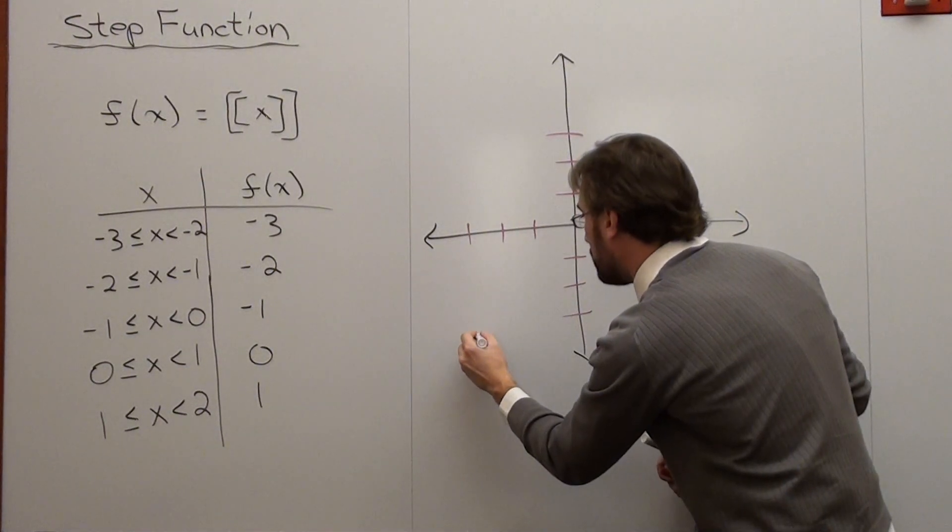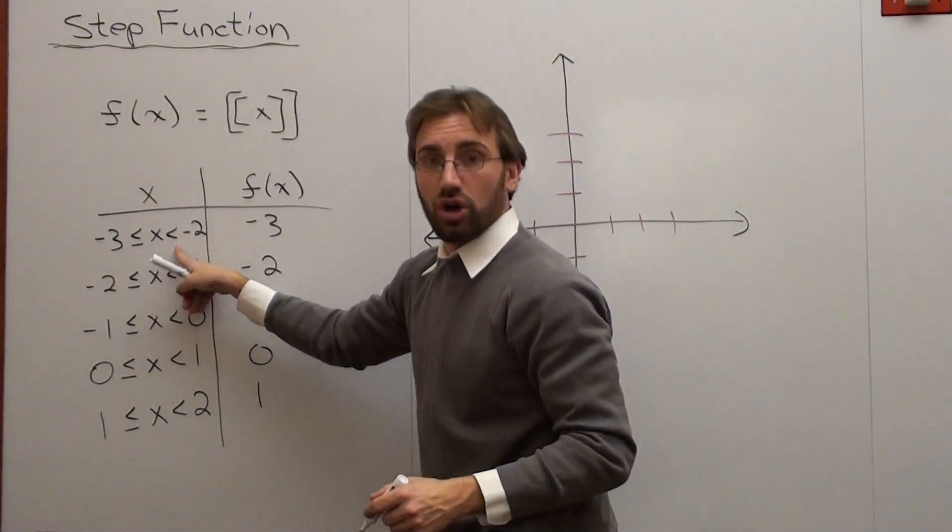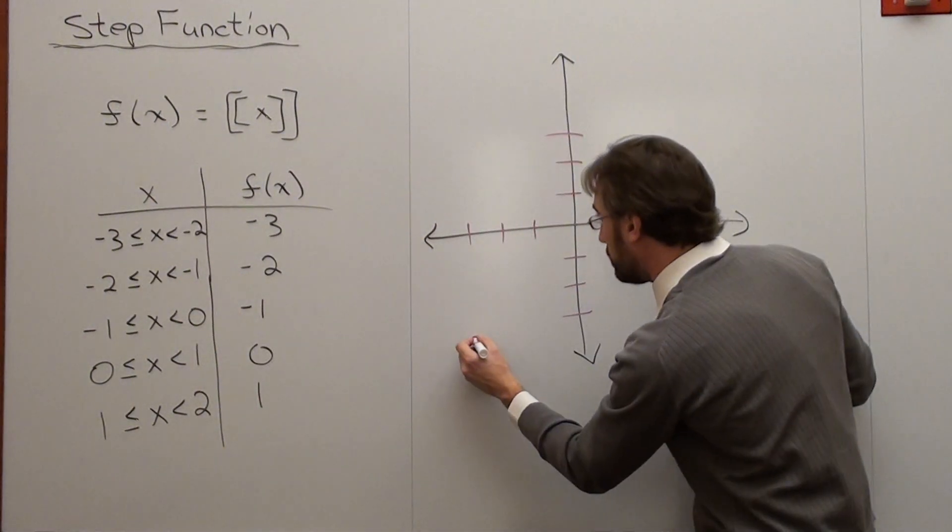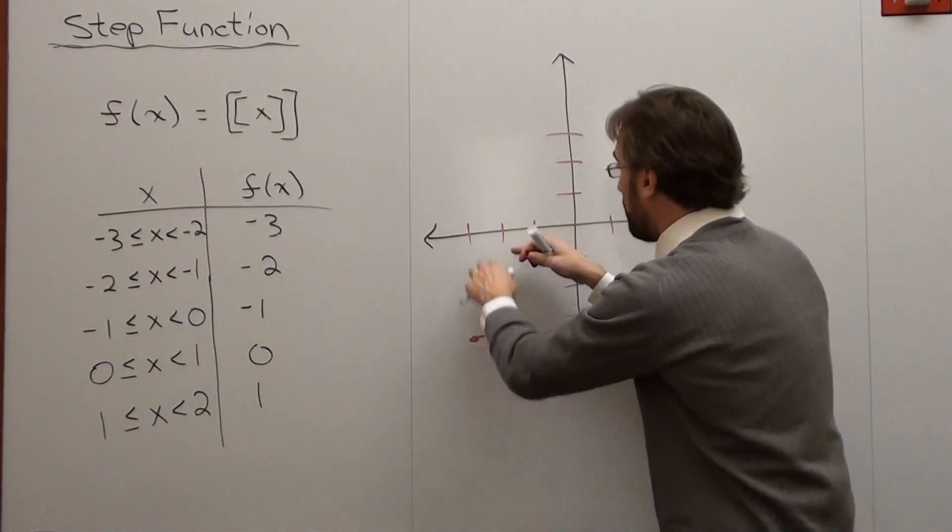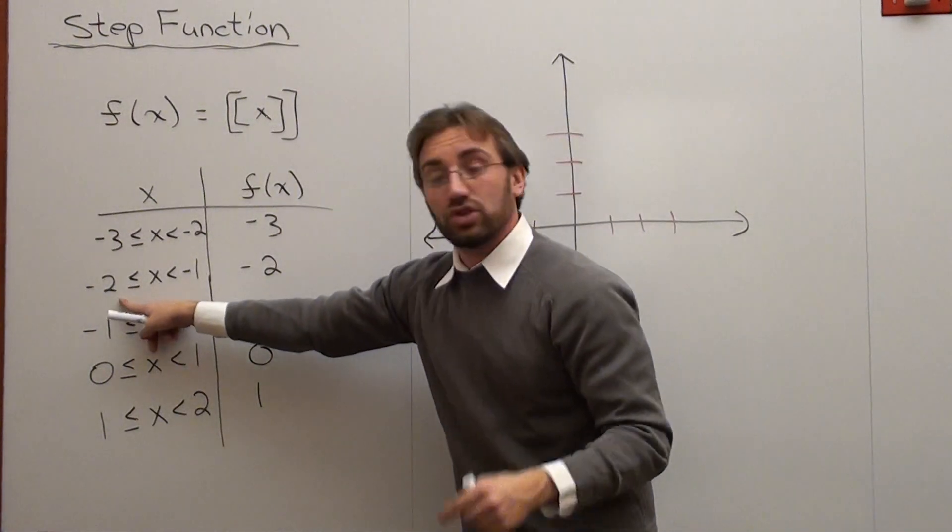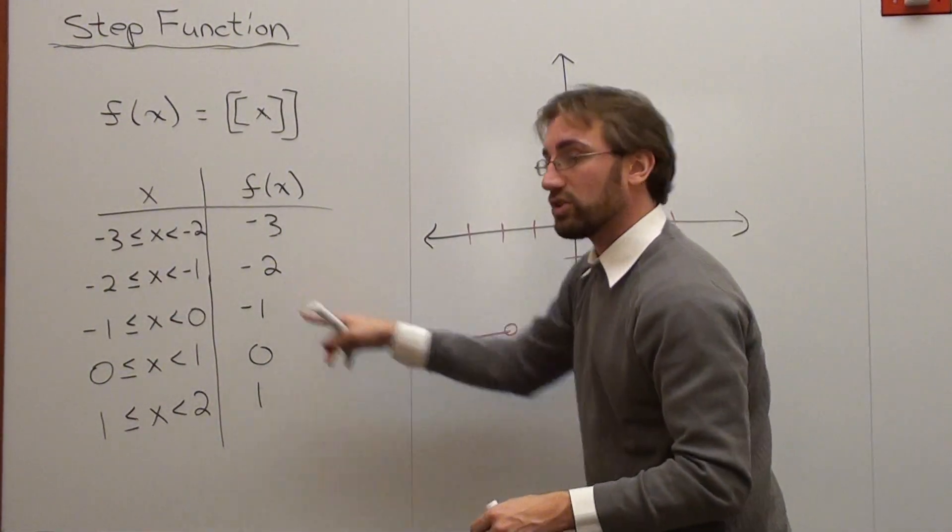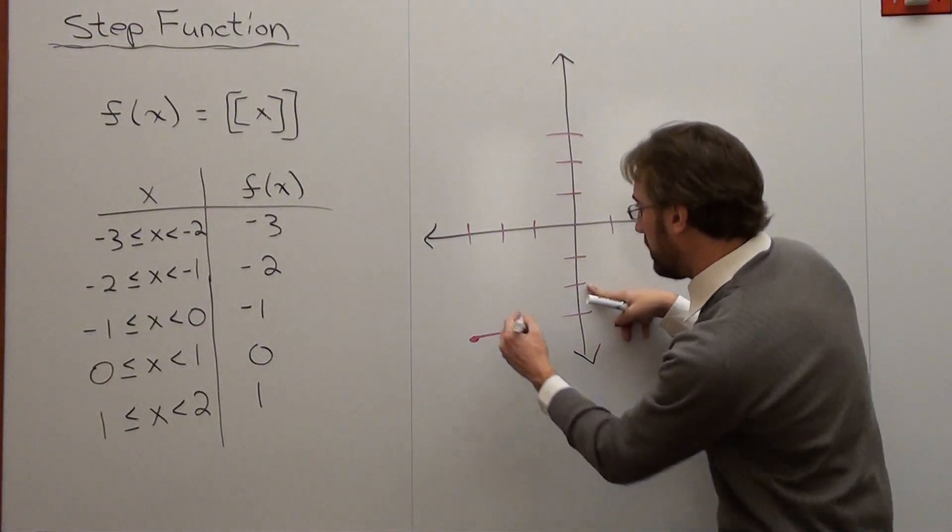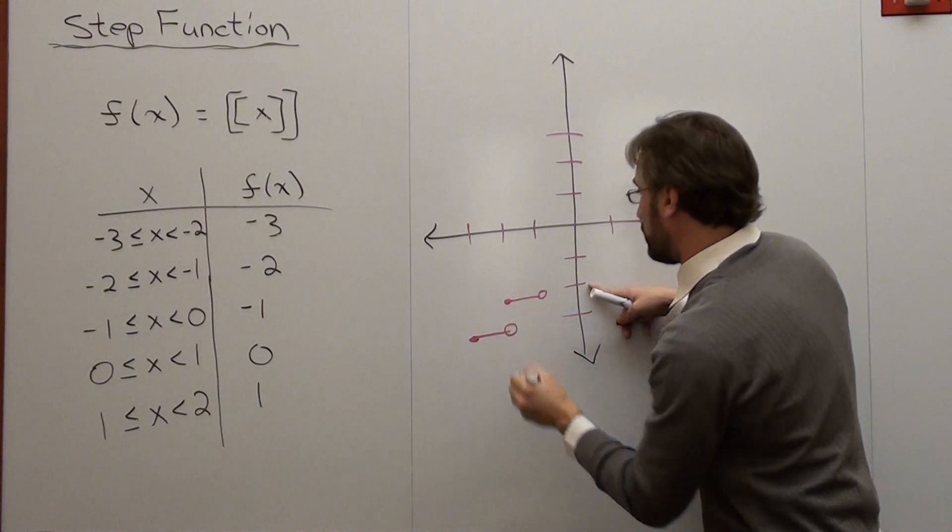So from negative 3, and that includes its closed circle, this one's open circle, all the way to negative 1 open circle, my y value is going to be negative 2. So my y is here, but now my x is here, and it's open circle.